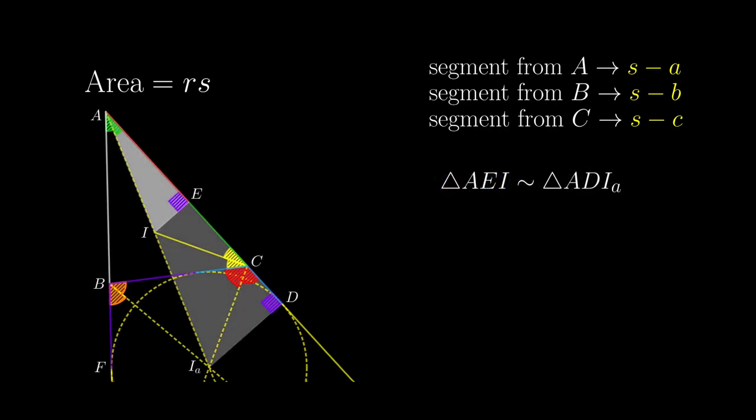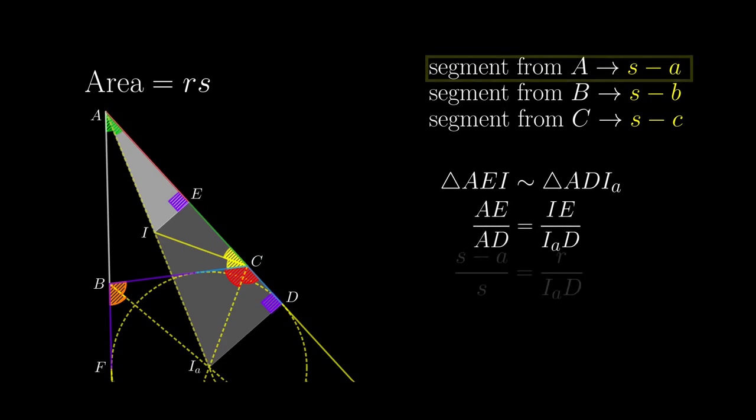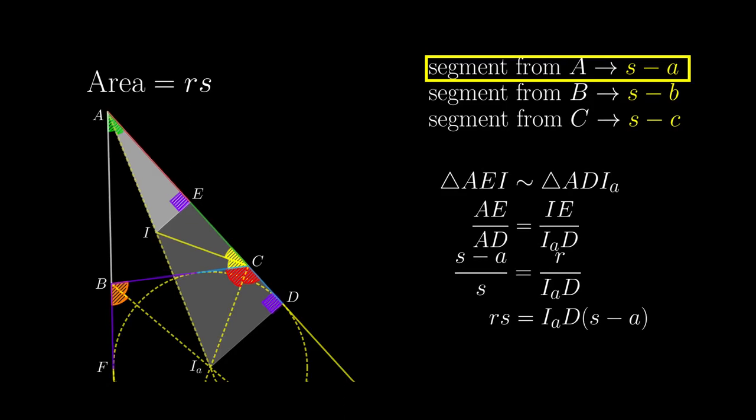Now we have this pair of triangles to be similar, which is pretty evident from the green common angle, and the right angles. So we have this proportion of sides. Since we have the previous result, we turn AE to s-a, and then we have this formula.